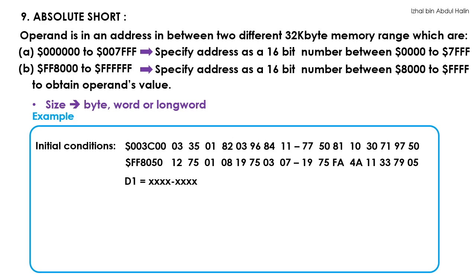The initial condition shows two 16-byte memory blocks. The first block starts at address 003C00 while the second block starts at address FF8500. D1's content is unknown. Consider the instruction MOVE.B 3C08.W, D1 — the 3C08.W is how you identify this addressing mode. 3C08 is a 16-bit address that lies between addresses 0 to 7FFF. The micro-P must pack the higher bits with 0s to make it a 32-bit number.